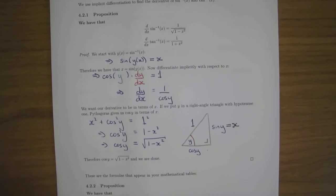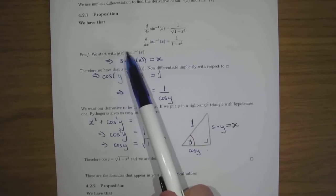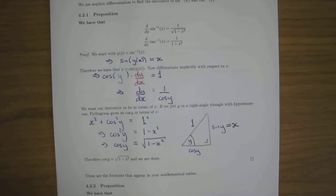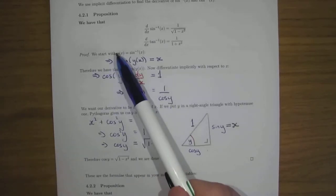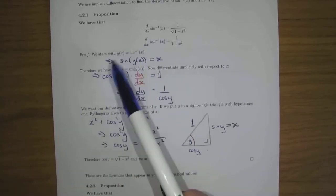You want to differentiate y of x which is inverse sine of x. What you can do here is if you take the sine of both sides, whatever sine inverse is, sine will be its inverse. So taking the sine of both sides, sine of y of x, sine will be the inverse of inverse sine, so you just get x.